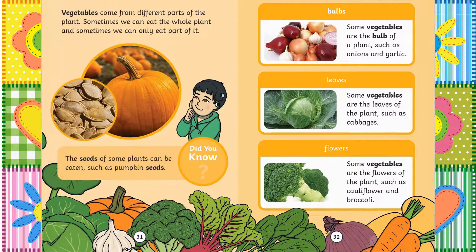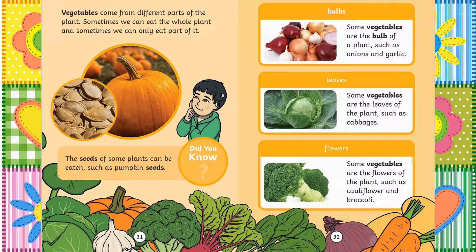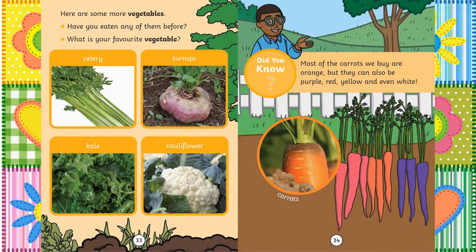Vegetables come from different parts of the plant. Sometimes we can eat the whole plant and sometimes we can only eat part of it. Did you know the seeds of some plants can be eaten such as pumpkin seeds? Bulbs — some vegetables are the bulb of a plant such as onions and garlic. Some vegetables are the leaves of the plant such as cabbages. Some vegetables are the flowers of the plant such as cauliflower and broccoli. Here are some more vegetables — have you eaten any of them before? What is your favourite vegetable? Celery, turnips, kale, cauliflower. Did you know most of the carrots we buy are orange but they can also be purple, red, yellow, and even white?